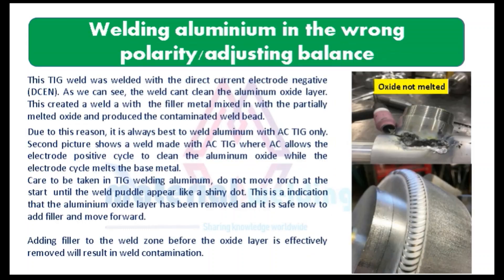Number 5 is welding aluminum in the wrong polarity or incorrect parameter balance. This TIG weld was welded with direct current electrode negative (DCEN). As we can see, the weld cannot clean the aluminum oxide layer, creating a weld with filler metal mixed in with partially melted oxide, producing a contaminated weld bead. For this reason, it is always best to weld aluminum with alternating current (AC) TIG only. The second picture shows a weld made with AC TIG, where AC allows the electrode positive cycle to clean the aluminum oxide while the electrode negative cycle melts the base metal. Do not move the torch at the start until the weld puddle appears as a shiny dot — an indication that the aluminum oxide layer has been removed and it is safe to add filler and move forward. Adding filler before the oxide layer is effectively removed will result in weld contamination.